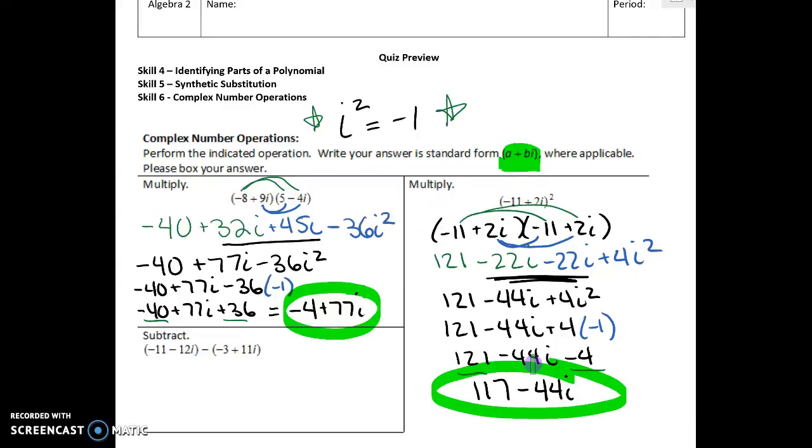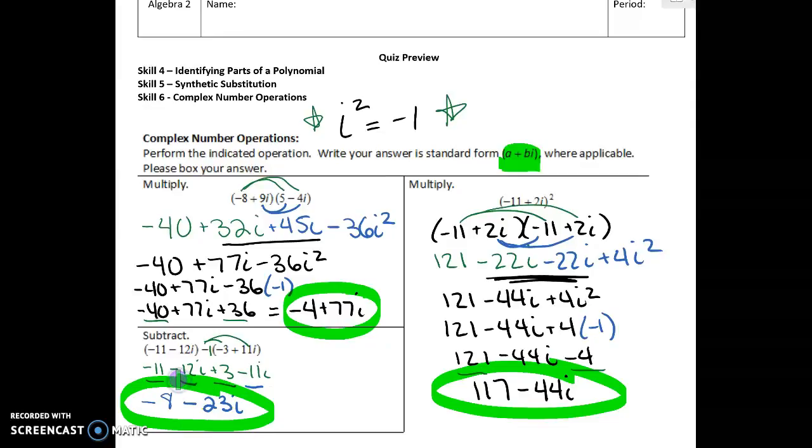Last one: subtract. You're just subtracting two complex numbers. You can pretend that's a negative 1 and just distribute it. So you've got -11 - 12i, drop the parentheses, negative 1 times negative 3 is a positive 3, and then you have -11i. You can combine like terms - I'm going to combine multiple like terms at the same time. That would be -8, and then -12i minus 11i would be -23i. So your final answer is -8 - 23i.